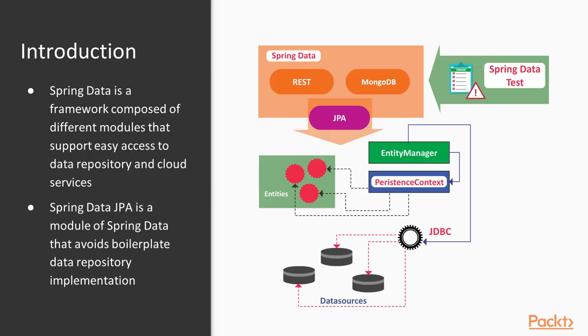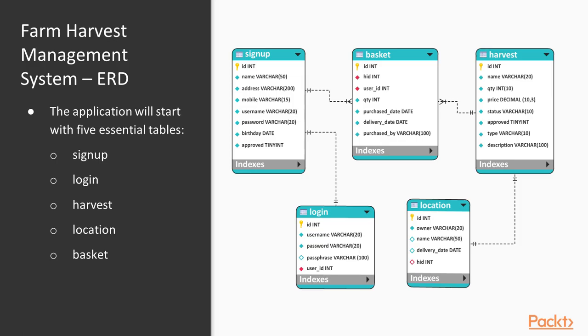Spring Data is a huge framework composed of different modules which aims to provide easy access to data repository and cloud services. One of these modules is the Spring Data JPA, which helps provide and build non-boilerplated data repository for our application. Let us now begin our detailed discussion on how to implement the data repository layer using the Spring Data JPA 2.2 module.